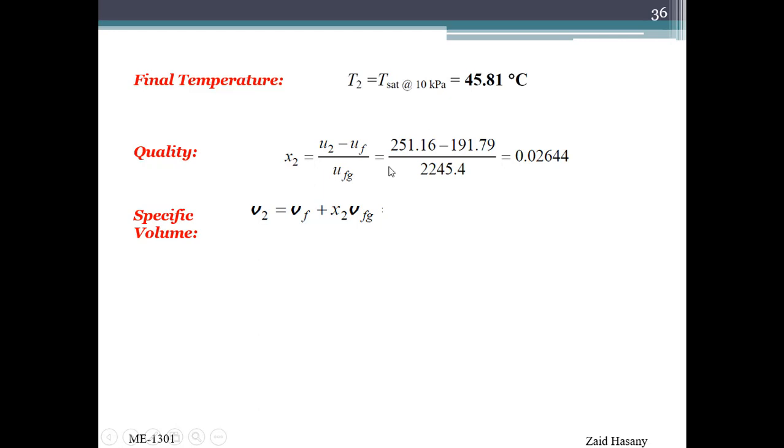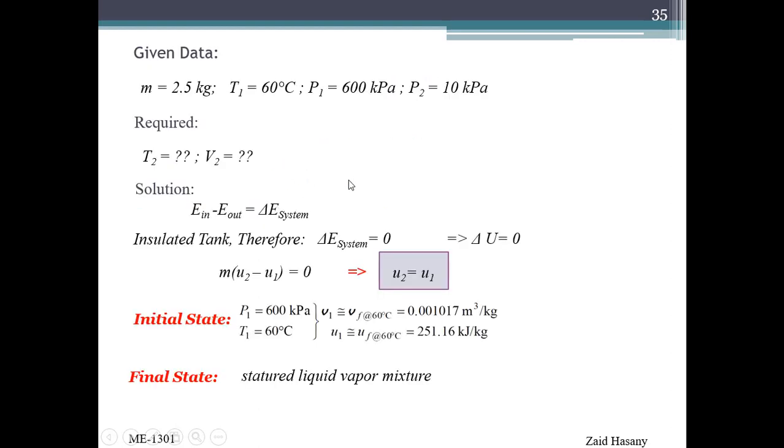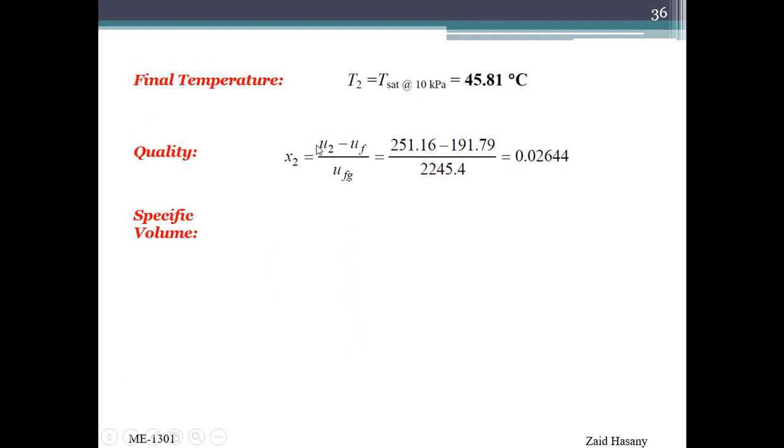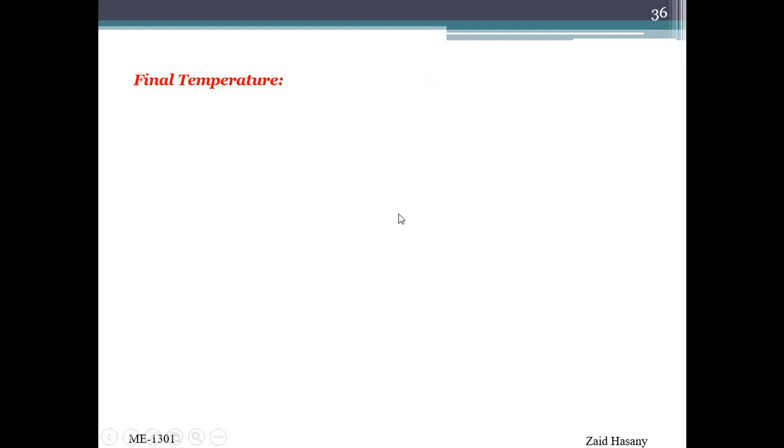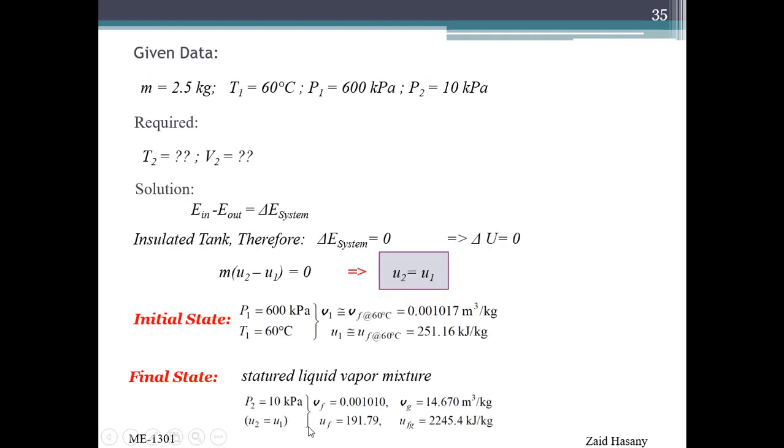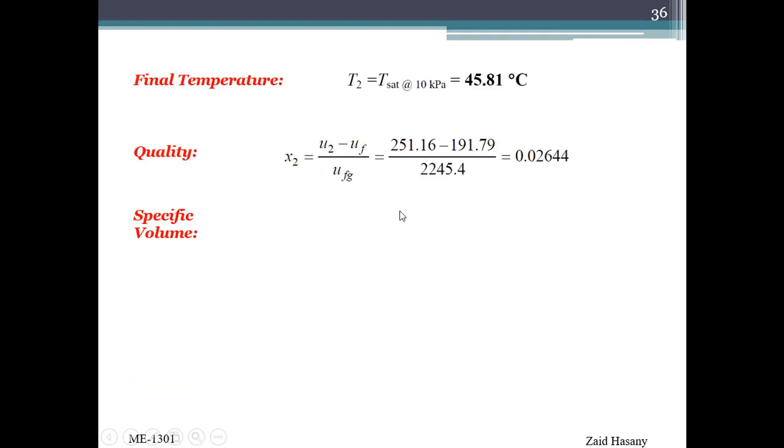Here we have the quality x2, which we need to find the final volume. U2 equals u1, so u1 minus uf divided by ufg gives us the quality x2, calculated from table A-5 values.